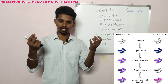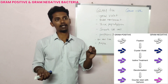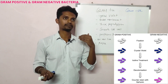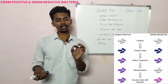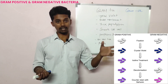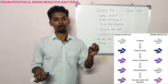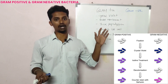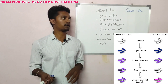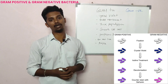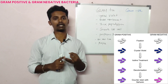First, we add the primary stain — crystal violet stain. If you add the primary stain to both gram positive and gram negative, both will take on a crystal violet color. Then we add iodine to make the color more dense and clear. First crystal violet, then iodine.